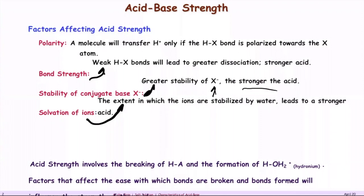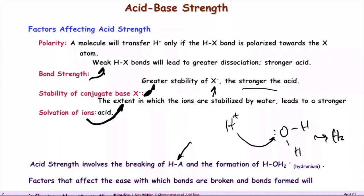Acid strength involves the breaking of the H-A bond and the formation of H₃O⁺. When you break the H-A bond, you get H⁺, and the H⁺ wants to anchor to water to form hydronium, H₃O⁺. The factors that affect the ease by which the bond is broken and the bond is formed will determine the strength of the acid.